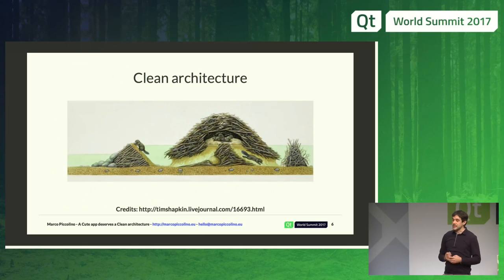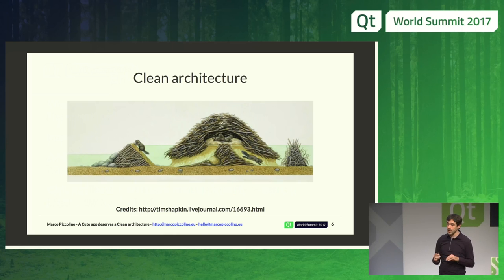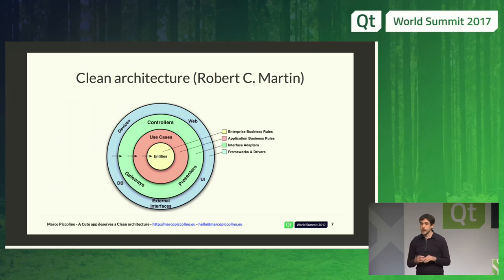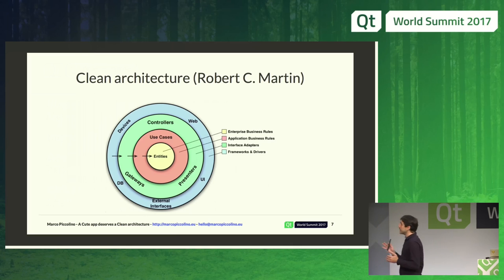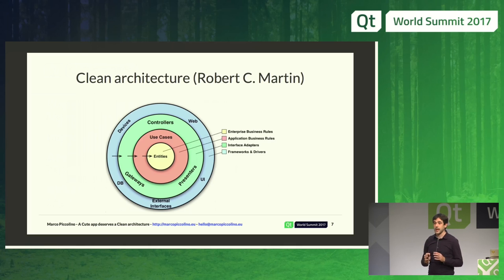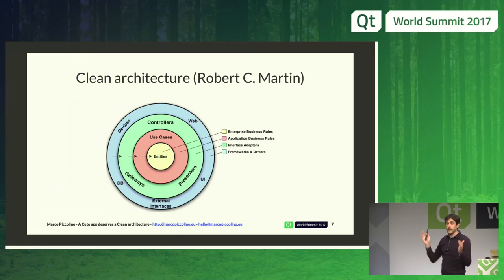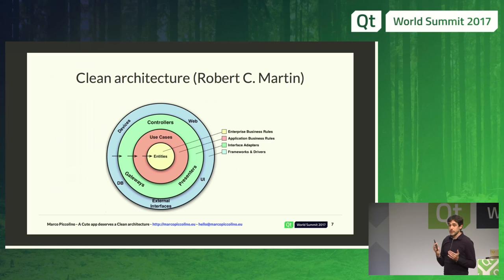The Clean Architecture is both a general term and a specific way of structuring things, suggested by Robert C. Martin, also known as Uncle Bob, a popular figure in software architecture circles. The main core is that your business entities and business objects should be the center of your application — everything else is a detail. The user interface is a detail, the database is a detail, everything which is technology is a detail.